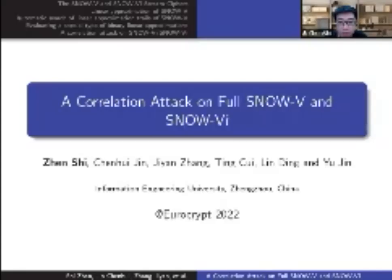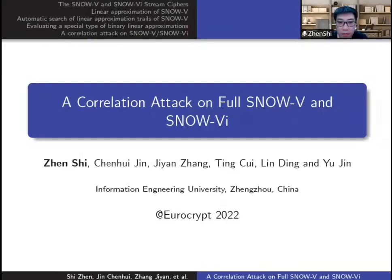This paper presents a correlation attack on full SNOW-V and SNOW-Vi. The authors are Zhen Shi, Chenhui Jin, Jiyan Zhang, Ting Cui, Lin Ding, and Yu Jin. First author Zhen Shi will present this paper. Hello everyone, I'm Shi Zhuang from Information Engineering University. Now let me introduce our work on the two stream ciphers SNOW-V and SNOW-Vi. This is a joint work with Jin Chenhui, Zhang Jiyan, Cui Ting, Ding Lin, and Jin Yu.